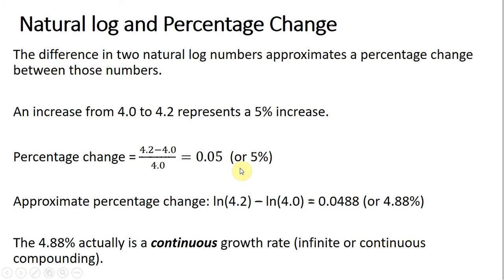If we multiply that by 100, we get 5%. So when we go from 4 to 4.2, this represents a 5% increase in whatever we're measuring, again, GDP, the capital stock, whatever.